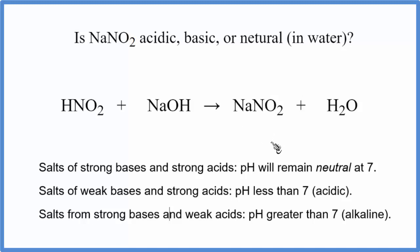So the neutralization reaction: we have our acid, HNO2, plus our base, NaOH. That gives us the sodium nitrite plus water. This is a neutralization reaction. If we know the strength of the acid and the base, we can figure out what the pH will be when it's dissolved in water.